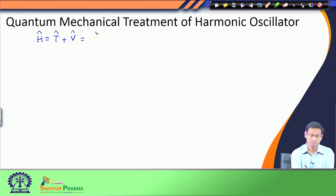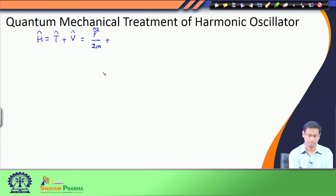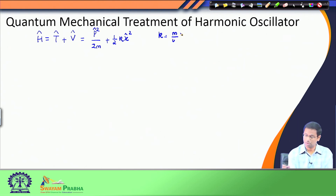We write down the Hamiltonian of the quantum mechanical harmonic oscillator. The Hamiltonian, which is the operator for the energy, has two components: one is the kinetic energy and the other is the potential energy. The kinetic energy operator is p̂²/2m — this hat suggests it is an operator. We know kinetic energy is momentum squared divided by 2m, and we use the momentum operator here. We already have the potential energy V equals half·k·x², derived using the fact that force is the negative gradient of the potential energy.